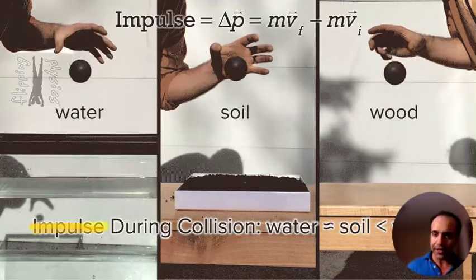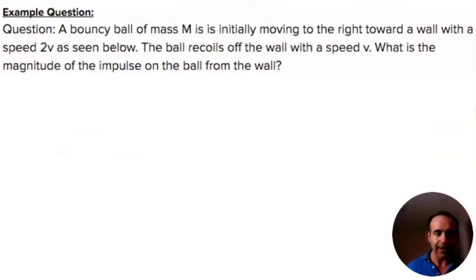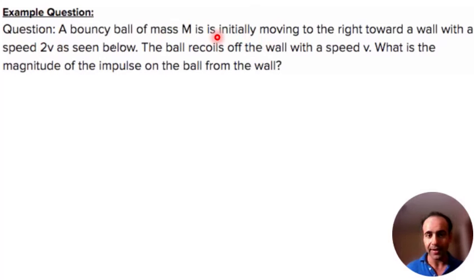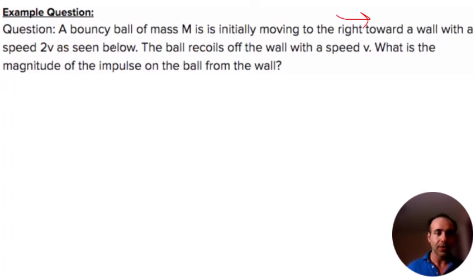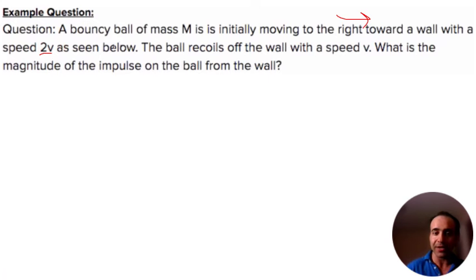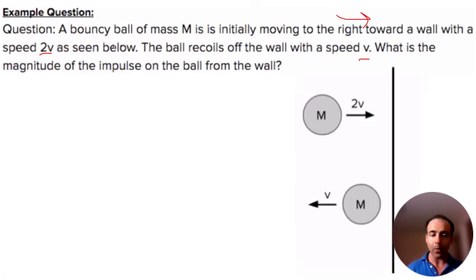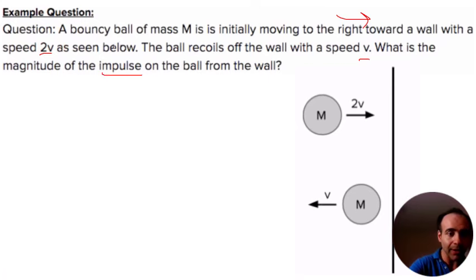Now let's look at an example question. A bouncy ball of mass m is initially moving to the right toward a wall with a speed of 2v. Once it bounces off the wall, it has a speed of just v. What we want to know is: what is the magnitude of the impulse on the ball from the wall?